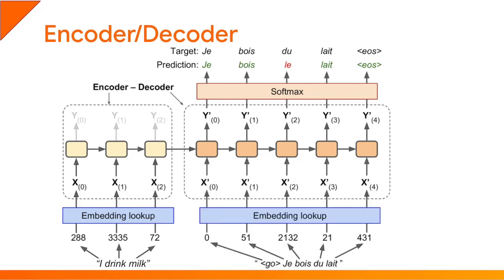The first tweak is to feed the target sentence to the decoder after shifting it by one timestep. This is why the decoder's inputs start with a GO token, also called the start-of-sequence token, or SOS. With this technique, at each timestep the decoder gets as input the word that it should have predicted at the previous timestep — this is called teacher forcing, and it helps the neural network learn during training. After training, when we want to translate new text, we won't have the labels, so at each timestep we can just feed the decoder the word that it actually predicted at the previous timestep.